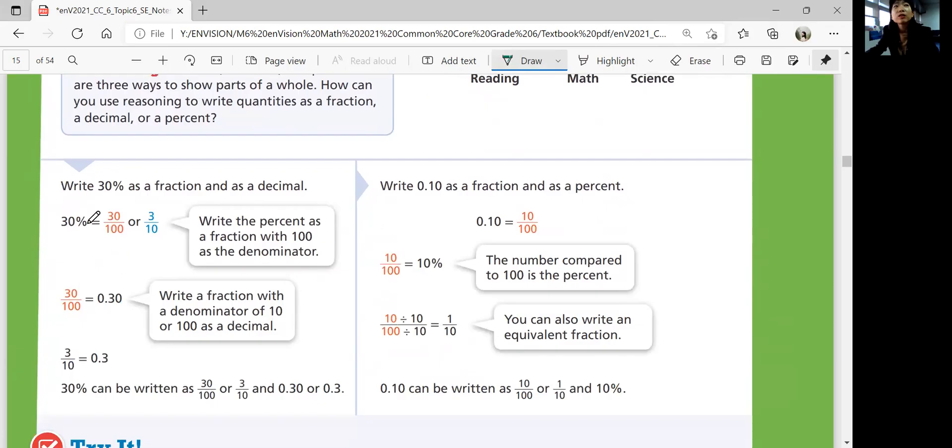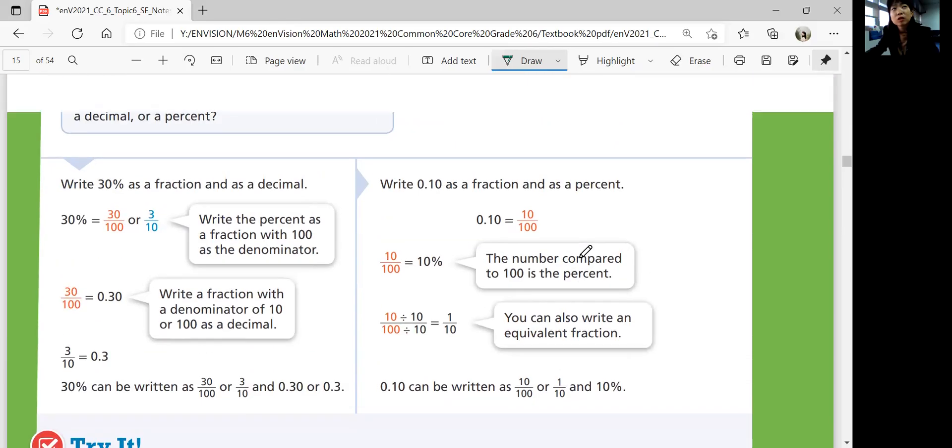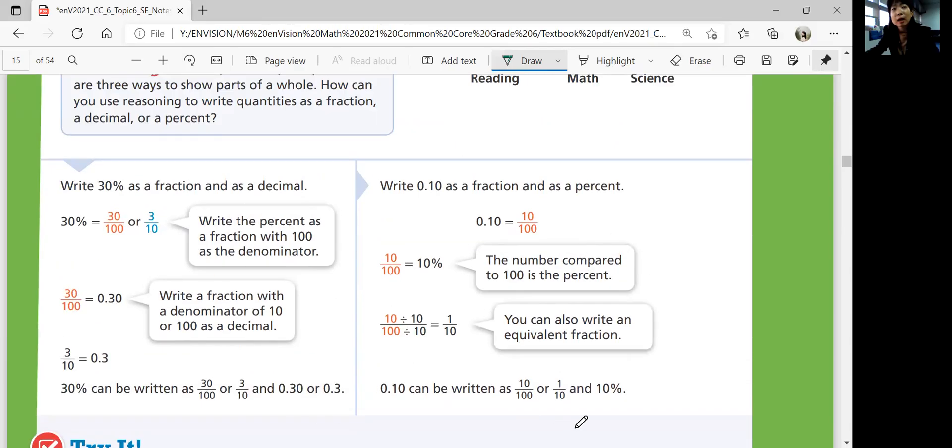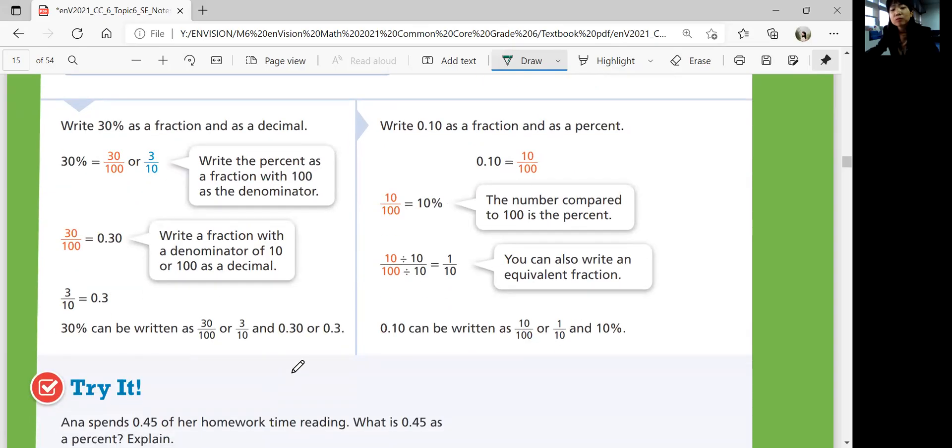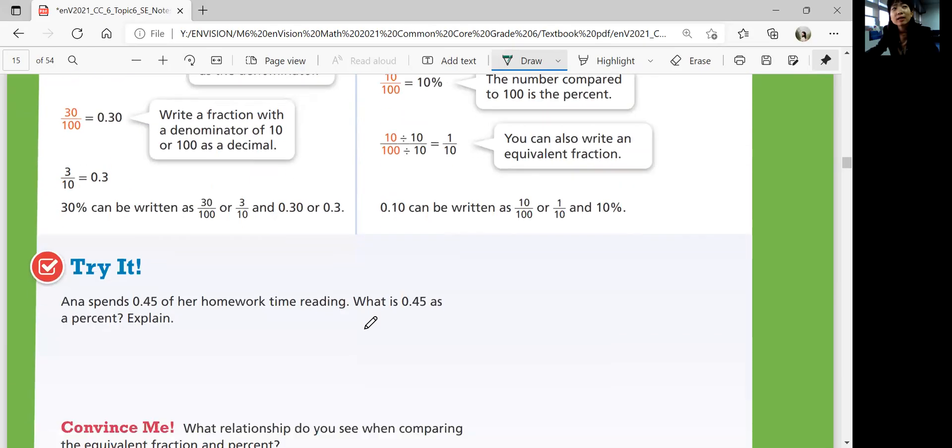So first, you need to write 30% as fraction and a decimal. So 30 over 100 or 3 over 10, and decimal is 0.30. And write 0.10 as fraction, that could be 10 over 100, and that could be 10%, okay? So you could rewrite them separately like that as well. So let's look at try it.